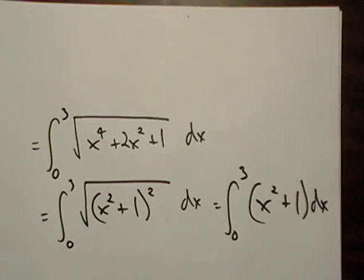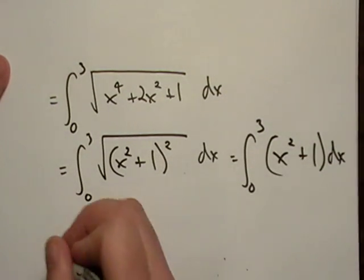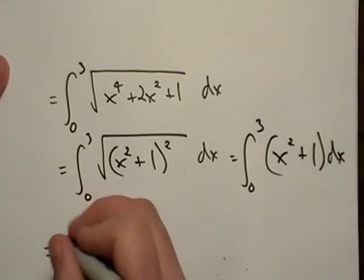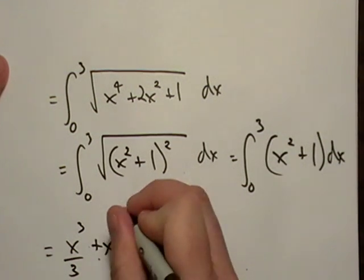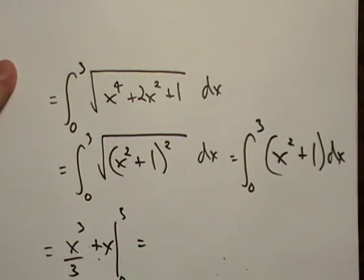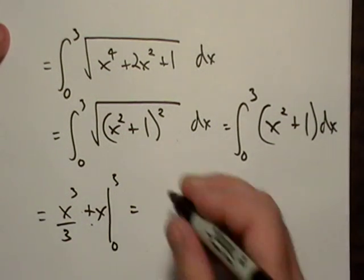Okay. Now that works out to our advantage because now we can go ahead and simplify. Okay. All right. So now we can just go ahead and let's go x to the third over three plus x. And we're going to evaluate from three to zero. I got to stay on the page. I never do.